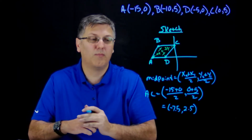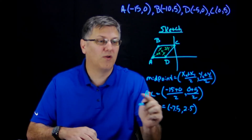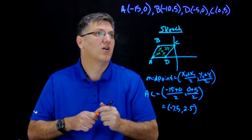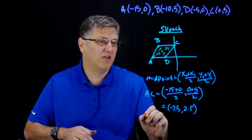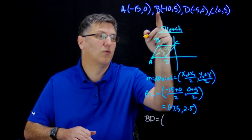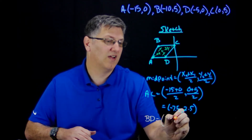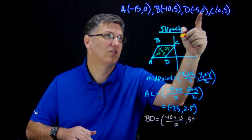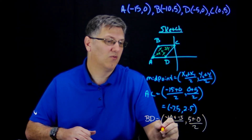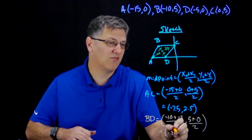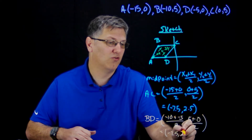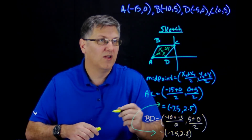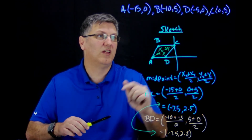Now if I find the midpoint of BD and get the exact same point, it's a parallelogram. If I get any other point besides negative 7.5 and 2.5, it's not a parallelogram. So: midpoint of BD is negative 10 plus negative 5 divided by 2, comma, 5 plus 0 divided by 2. That gives me negative 15 divided by 2, which is negative 7.5, and 5 divided by 2 is 2.5. We have the exact same midpoint, so quadrilateral ABCD is in fact a parallelogram.